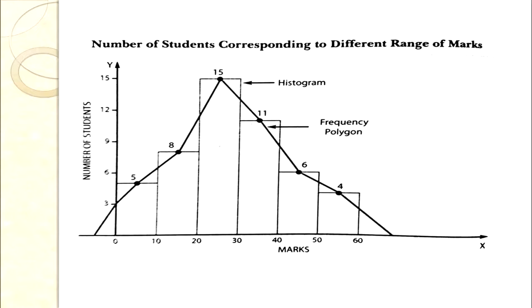We can see the histogram has been drawn and labelled — x-axis as marks, y-axis as number of students. Mid-points on the top of each rectangle are found. The mid-point values are 5, 8, 15, 11, 6, and 4. To start and end the polygon, we need a point on the x-axis on both sides — find the mid-point of the next and previous classes. Then join all points with a scale to get the frequency polygon.